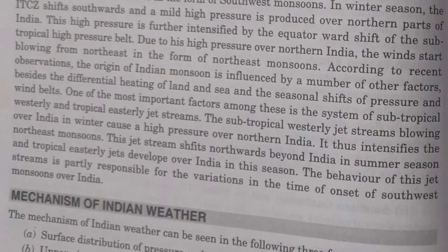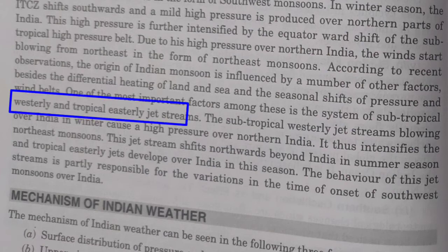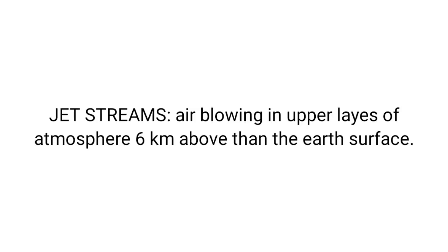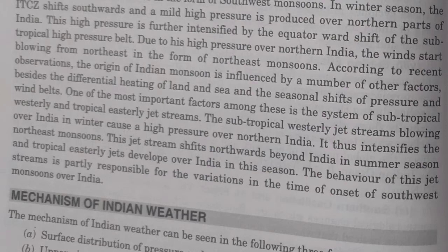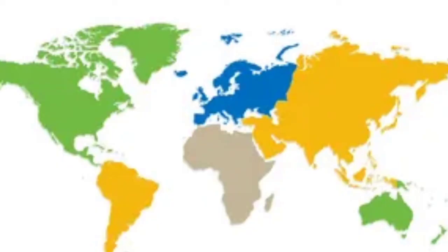According to modern observers, these two theories were not enough to support the occurrence of monsoon, so they came up with another theory — the jet stream theory. Jet streams refer to air present at upper air levels above 6 km from the Earth's surface, and they are very fast-moving air currents. There are two types of jet streams.